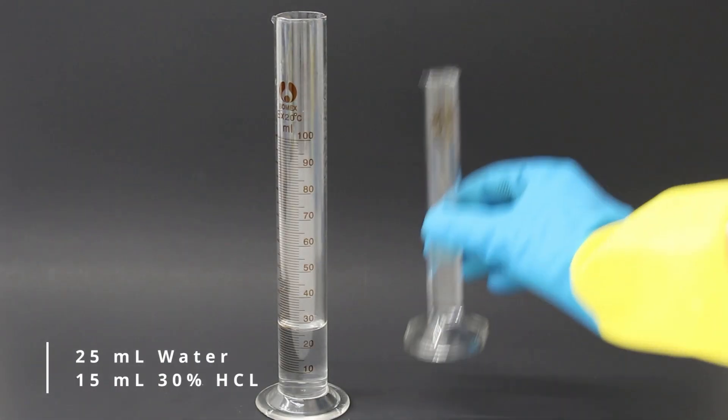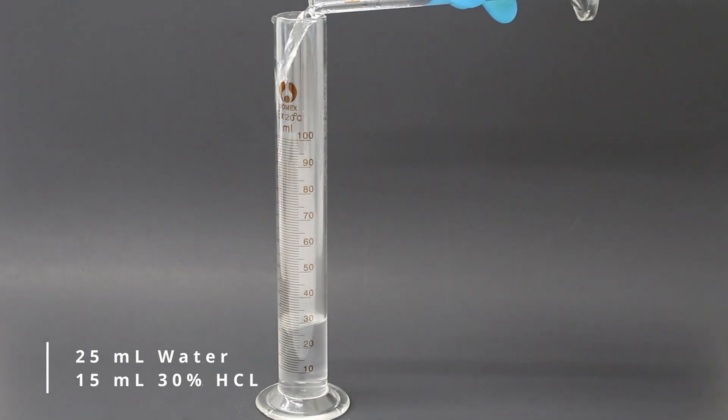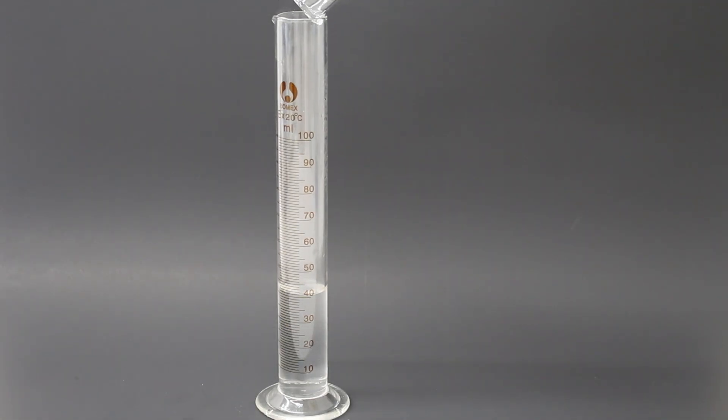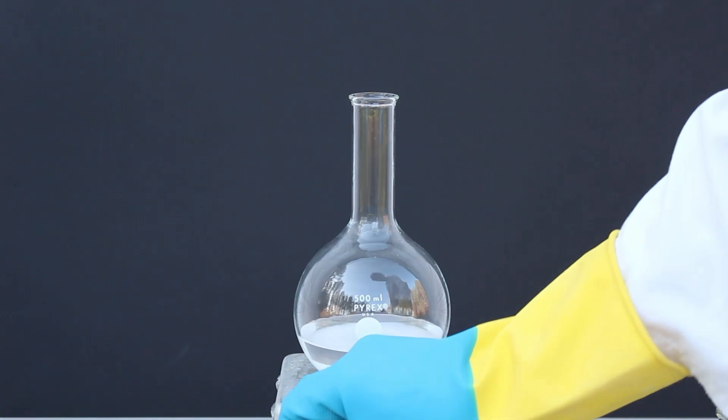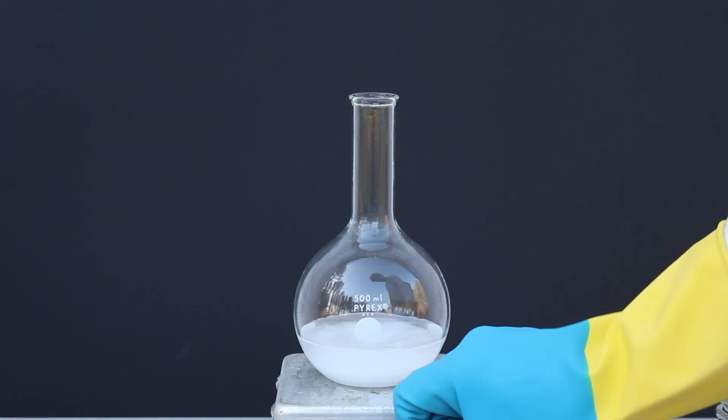Next, we're going to create a solution of 25 milliliters of water and 15 milliliters of 30% hydrochloric acid. For the next step, we're going to want to go outside because we're going to be generating a lot of toxic gases and acidic fumes.